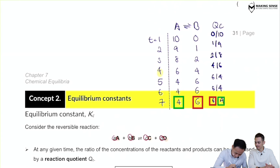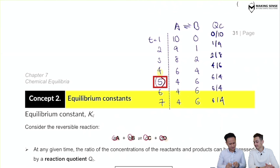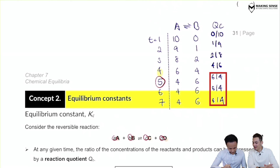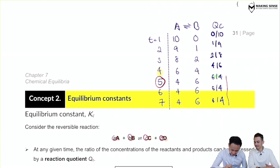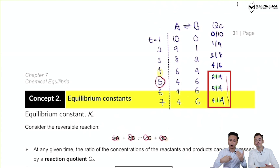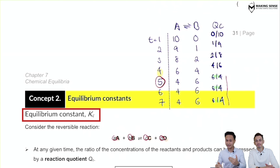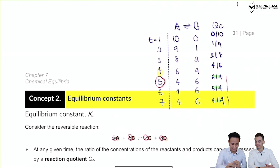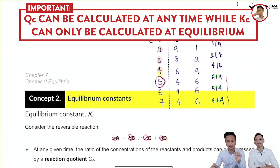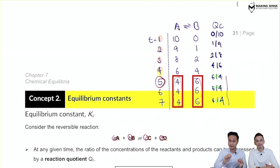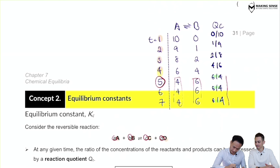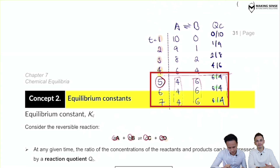Notice that at five minutes, Qc is 6/4, 6/4, 6/4 — it is constant from the fifth minute onwards. When Qc is fixed, we can rebrand it and call it Kc, the equilibrium constant. To summarize: the reaction quotient Qc can be calculated at any timeframe; it doesn't have to be at equilibrium. But Kc must be at equilibrium — meaning the concentration of reactants and products does not change with time.